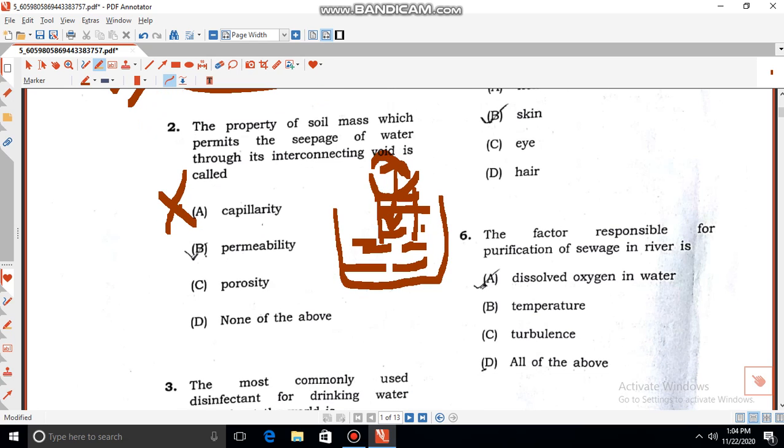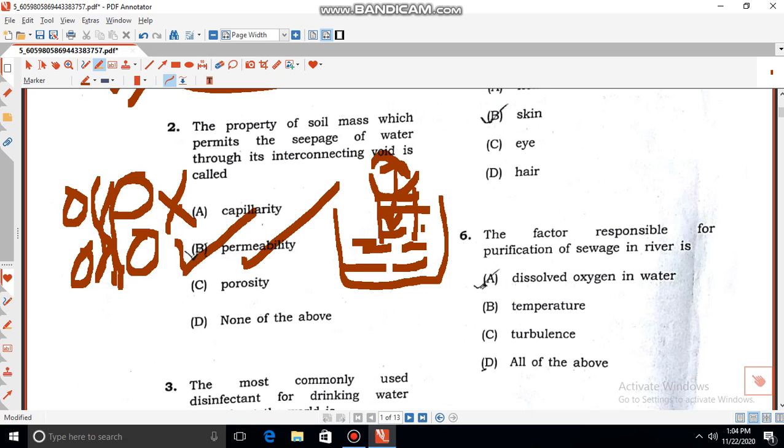Second is permeability. Permeability is the property of soil mass which permits the passage of water. Suppose these are the soil mass and the water is flowing through the interconnected voids. That means permeability is the correct answer. This is the correct option. And porosity we all know is volume of voids with respect to total volume, so porosity is not correct. So our correct answer will be permeability.